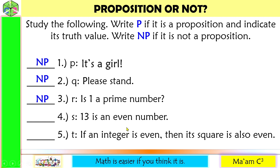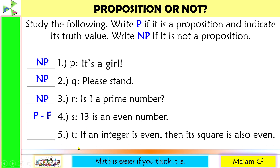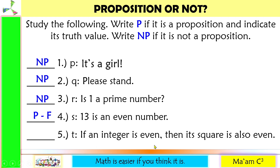Number four: '13 is an even number.' This is a proposition. Now let us determine if this is true or false. Is 13 an even number? False. So this statement is a proposition whose truth value is false. Number five: 'If an integer is even, then its square is also even.' This is a declarative sentence. Let us say the integer is 2 — 2 squared is 4, which is even. Let's try 10 — 10 squared is 100, which is also even. So this is a proposition whose truth value is true.